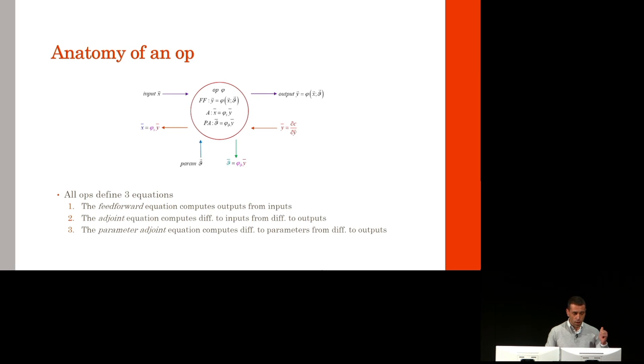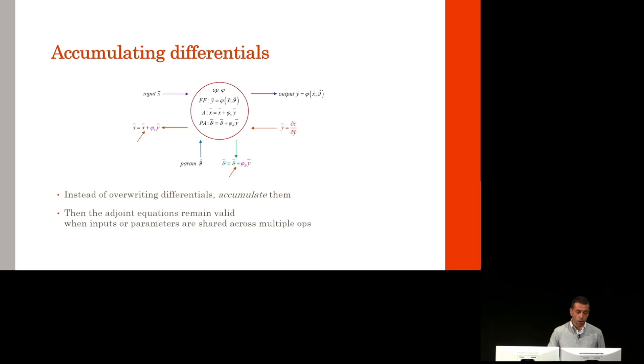An op really defines three equations. First, the feedforward equation that computes the outputs from the inputs. Second, the adjoint equation that computes the differentials to the inputs from the differentials to the outputs. And finally, the parameter adjoint equation, computing the differentials to parameters from differential to outputs. Now, here it looks like we are overwriting the differentials, but it's much better to accumulate them because then and only then, the adjoint equations remain valid when inputs or parameters are shared across multiple ops.